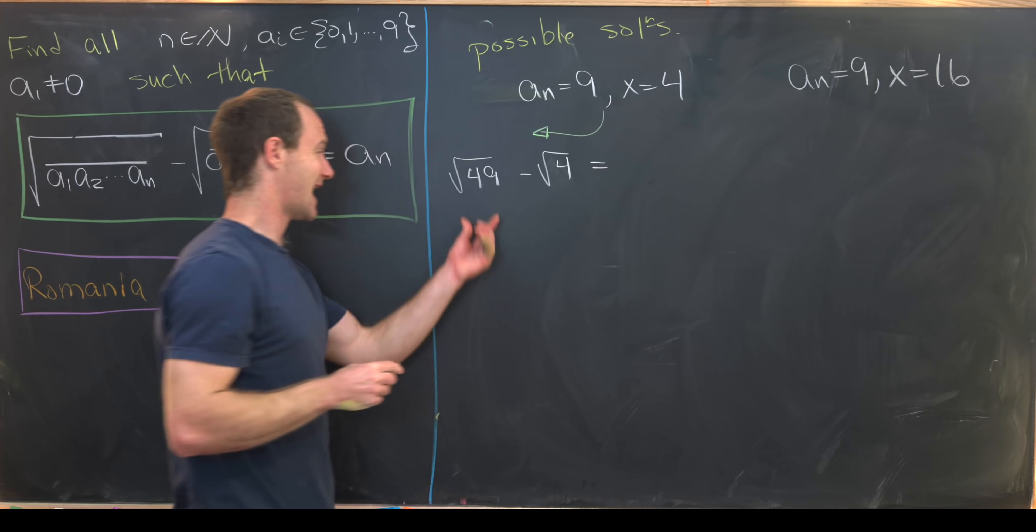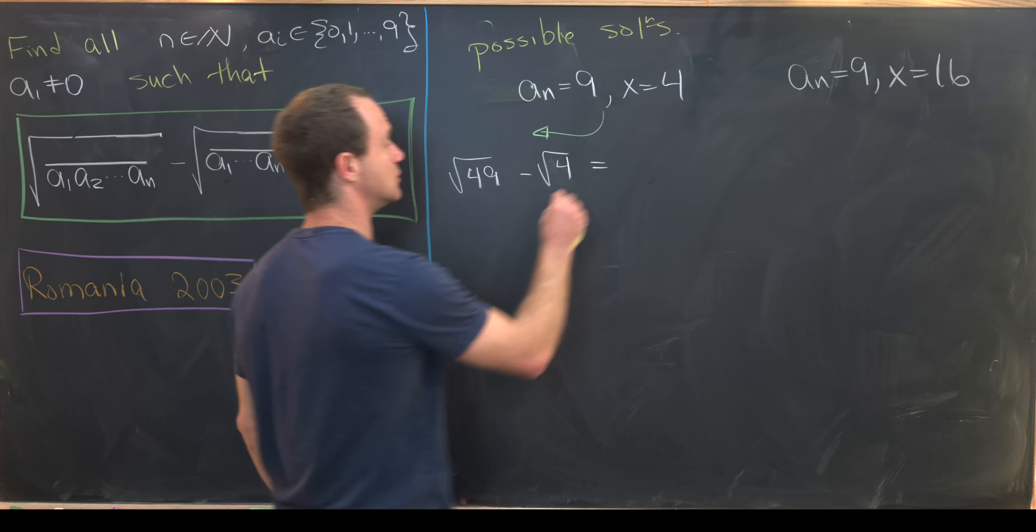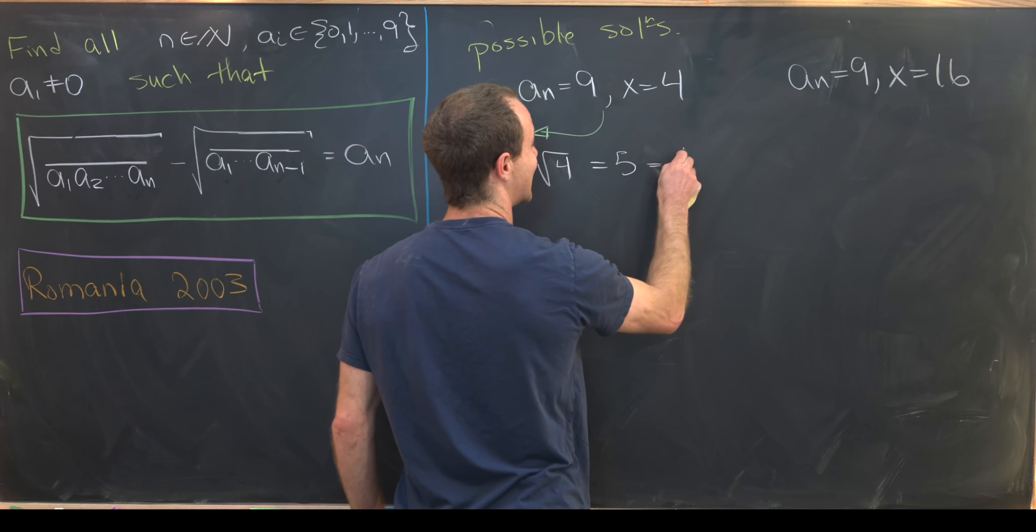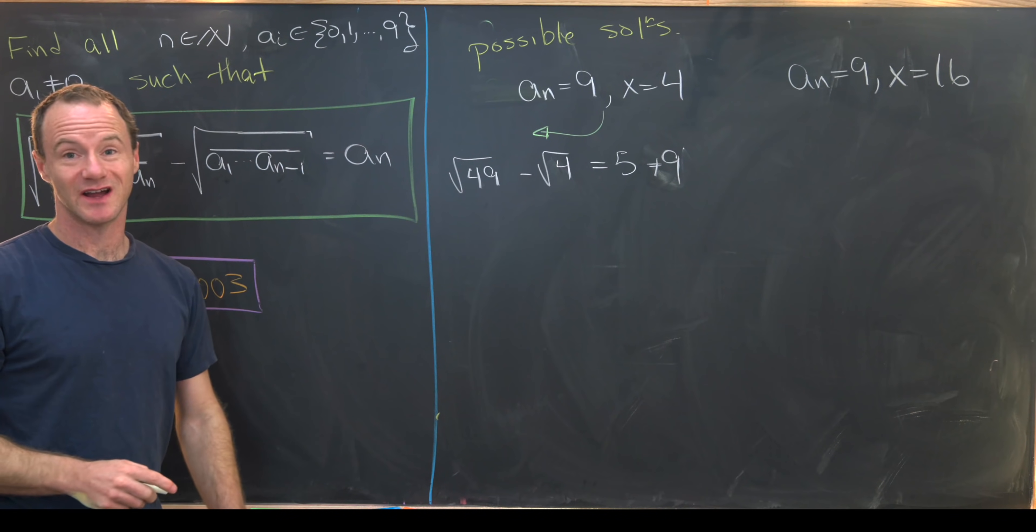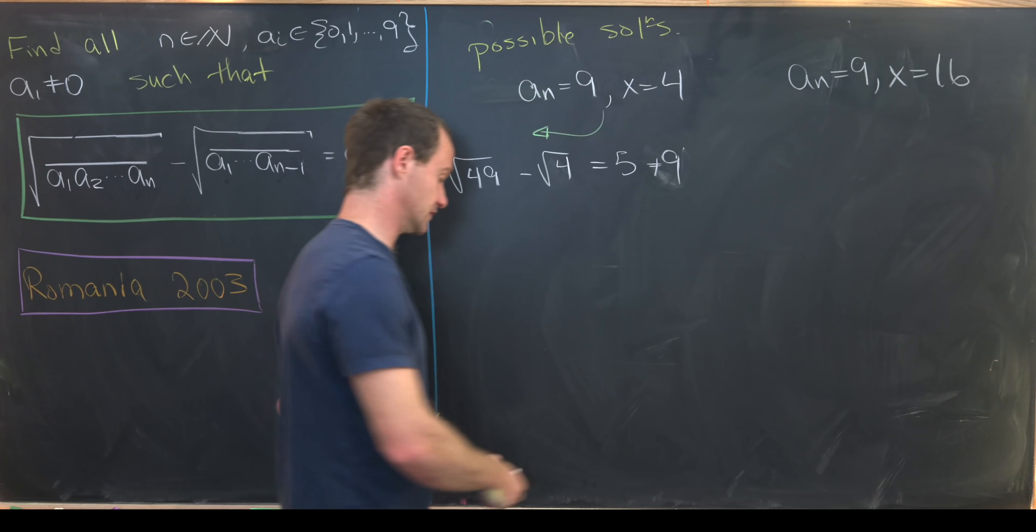But notice that that is equal to 7 minus 2, which is 5, which is not equal to 9. So in other words, we are not satisfied by this solution.